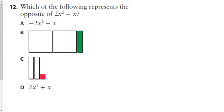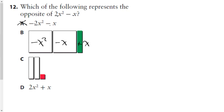Question 12: which of the following expressions is the opposite of 2x² minus x? Initially we'd say this is the opposite of this — but this one is the same as that, so it's not the opposite. A negative x-squared, a negative x-squared with a positive x — that would be negative 2x² plus x, which is the opposite. We can stop right there — that is the answer.